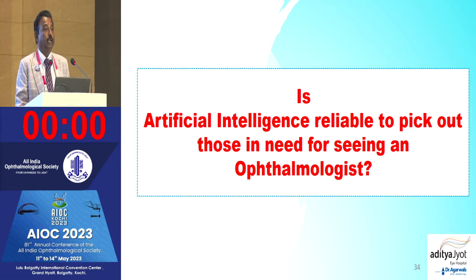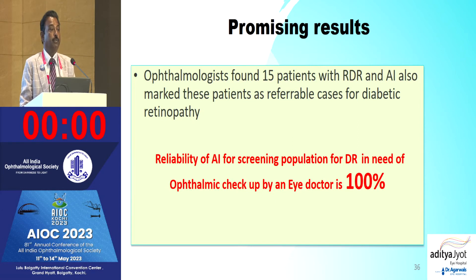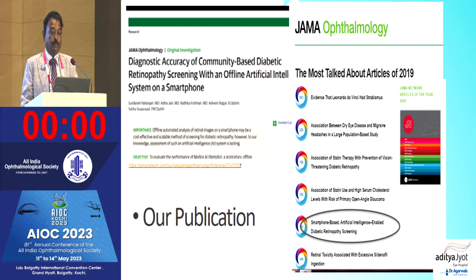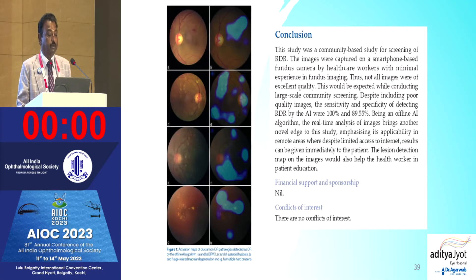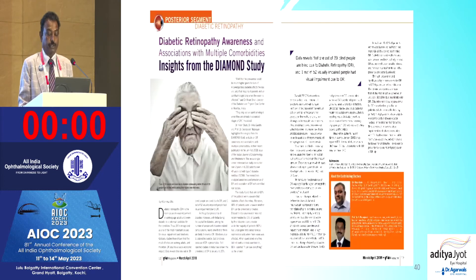Our research question was: is AI reliable to identify those in need of seeing an eye doctor? An ophthalmologist found 15 patients with referable diabetic retinopathy, and the AI also marked these same patients as referable. Reliability was 100%. This was published in JAMA — the diagnostic accuracy of community-based diabetic retinopathy screening with an offline AI on a smartphone — and ranked among the most-talked-about articles in 2019. Further work was published in the Indian Journal of Ophthalmology.